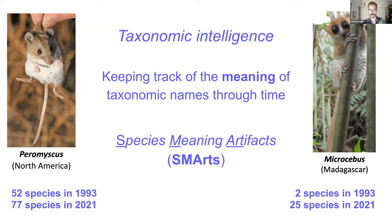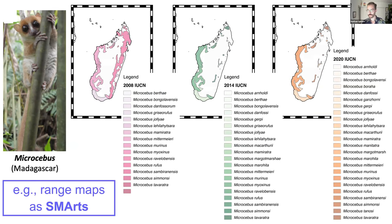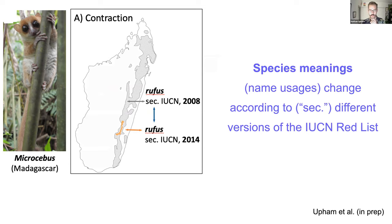A key idea is species meaning artifacts — we can grab the essence of a species name meaning through something called SMARTs. An example of a SMART could be a range map. Looking at Microcebus mouse lemurs in Madagascar, we see a very different set of species in 2008, 2014, and 2020. Microcebus rufus shows quite a different delineation — from the entire eastern Madagascar to a range-restricted position — partly due to taxonomic splitting and partly due to habitat loss.